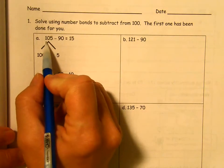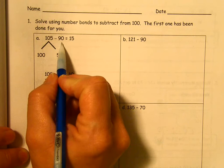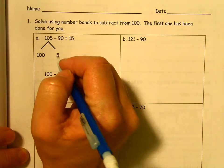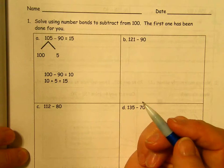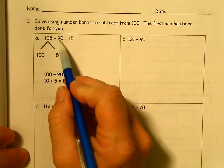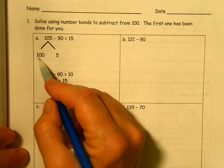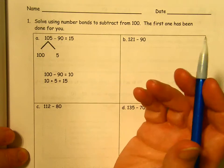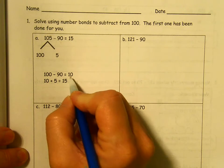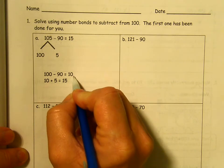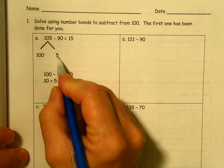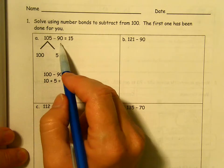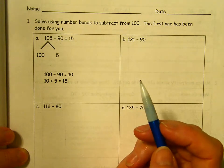The first problem is 105 minus 90. So 105, we just need to take out a 5, right? Five ones. So we have 100 minus 90 or 10 tens minus 9 tens. 10 minus 9 is 1. So 100 minus 90 is 10. Then we just have to add that 5 back in. 10 plus 5 equals 15, and 105 minus 90 equals 15.